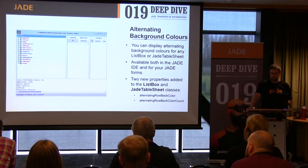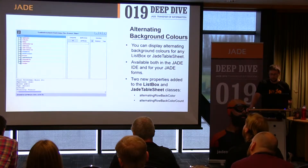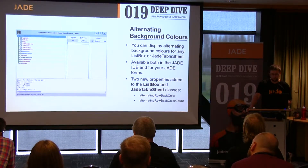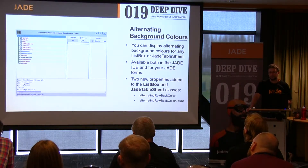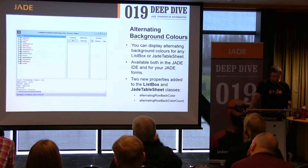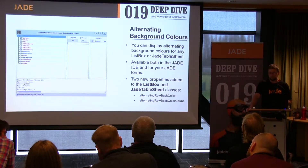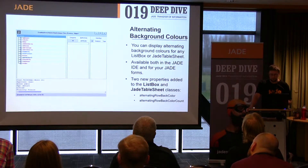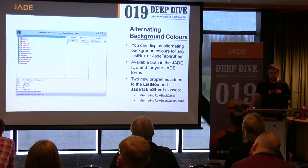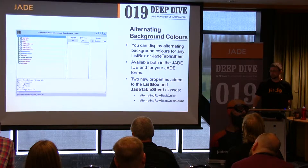We've also added the ability to set alternating background colors to the list box and jade table sheet controls to help visually differentiate items. The new alternating row back color property sets the color. The alternating row back color count dictates the frequency of the colored background items. By default it's zero, meaning off; one meaning it's all on, so they're all colored; and n will color every nth row.